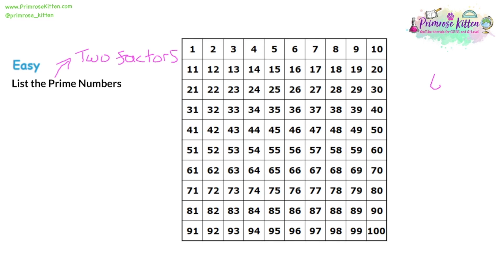Let's look at the number six. Nice and systematic — start with the smallest numbers and work your way up. Six divided by one is six, so one is a factor of six. Then six divided by two is three, so two is a factor of six. Then six divided by three is two, so three is a factor of six.